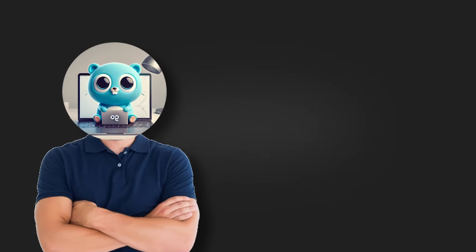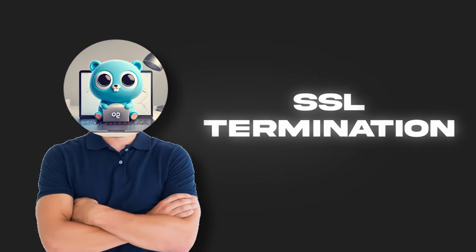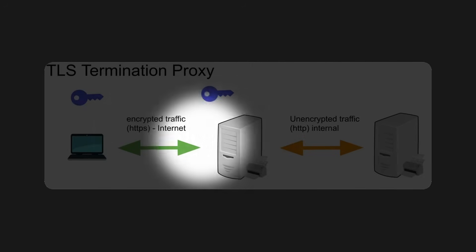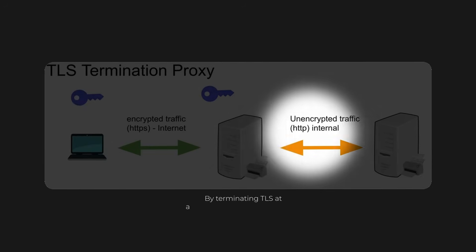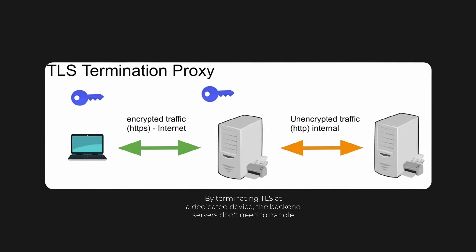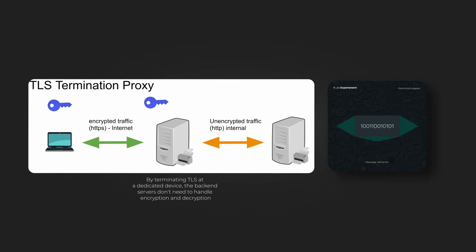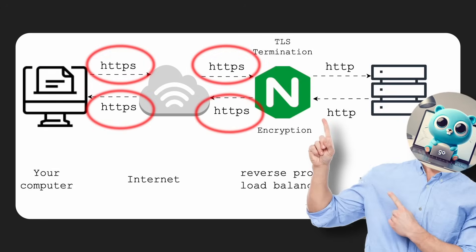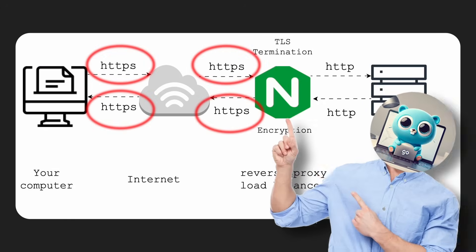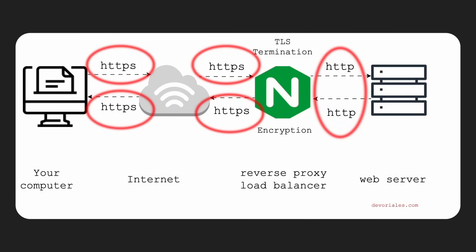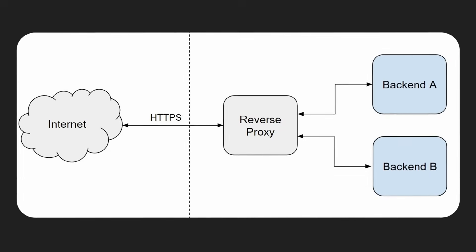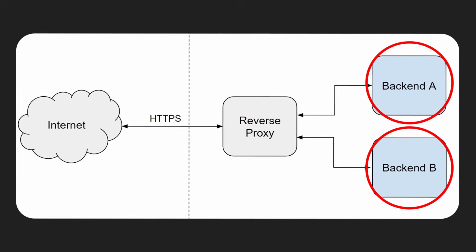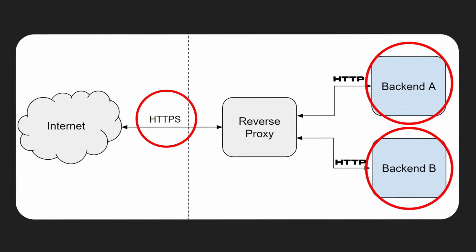Now back to SSL termination. A very common function of reverse proxies is SSL termination. This means the proxy is responsible for handling the TLS handshake and decrypting incoming HTTPS traffic. Once the proxy decrypts the request, it can inspect or modify it before forwarding it to internal servers over plain HTTP. This reduces CPU overhead on backend servers, centralizes SSL certificate management, and enables logging and access control at the proxy layer.